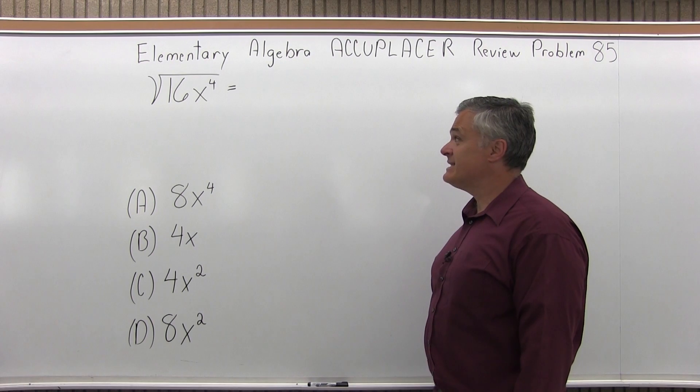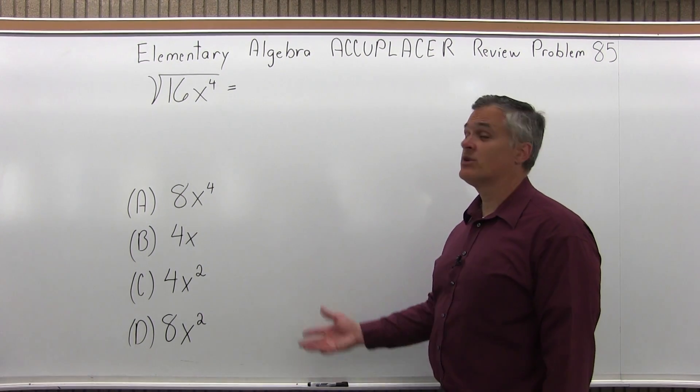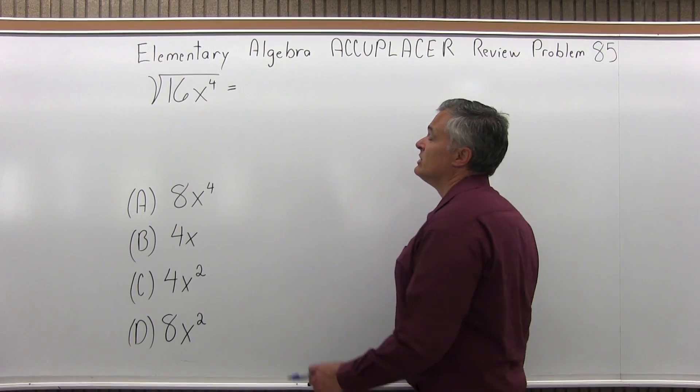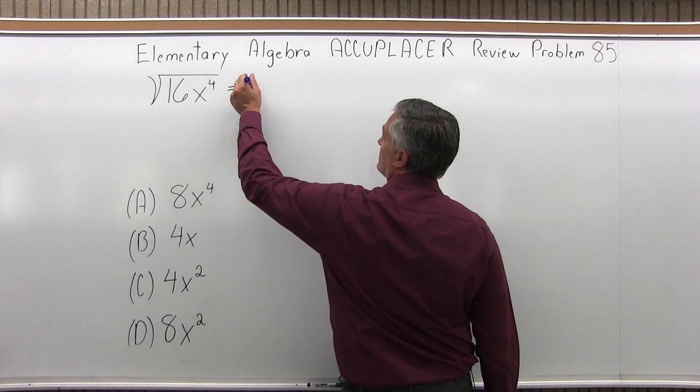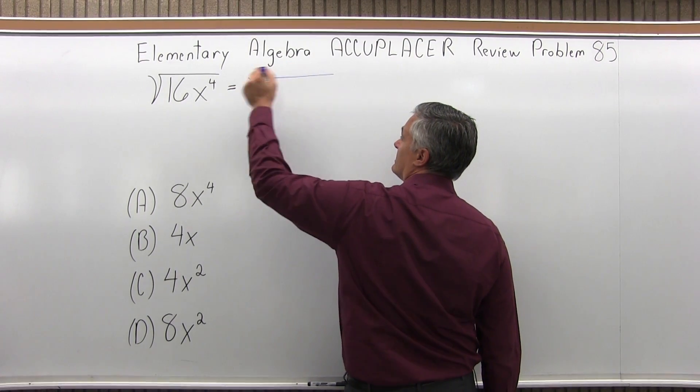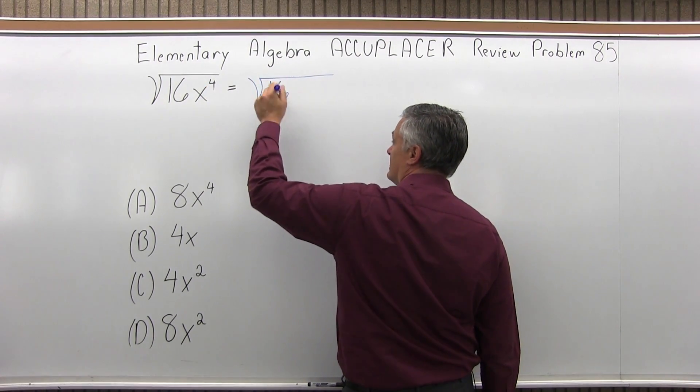We have the square root of 16x to the fourth equals which one of the following four options? So to simplify this, what I'd like to do is rewrite this as, the 16 is okay,